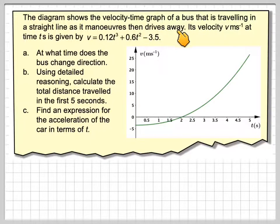The diagram shows a velocity-time graph of a bus that is travelling in a straight line as it manoeuvres and then drives away. Its velocity v metres per second at time ts is given by v equals 0.12t cubed plus 0.6t squared minus 3.5.